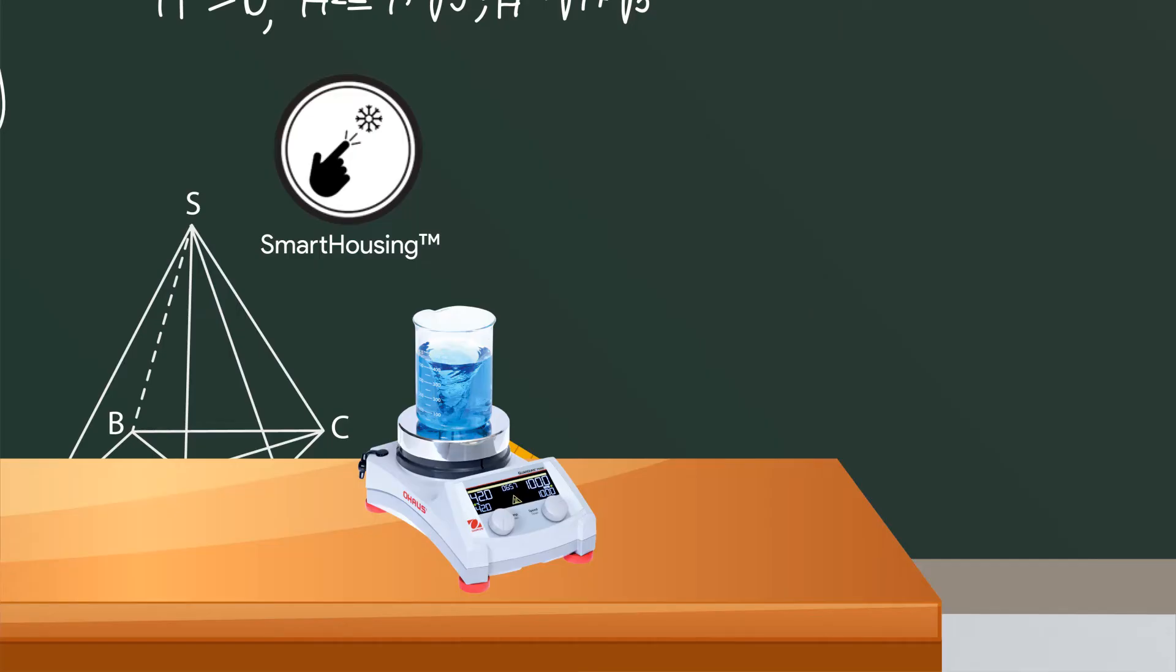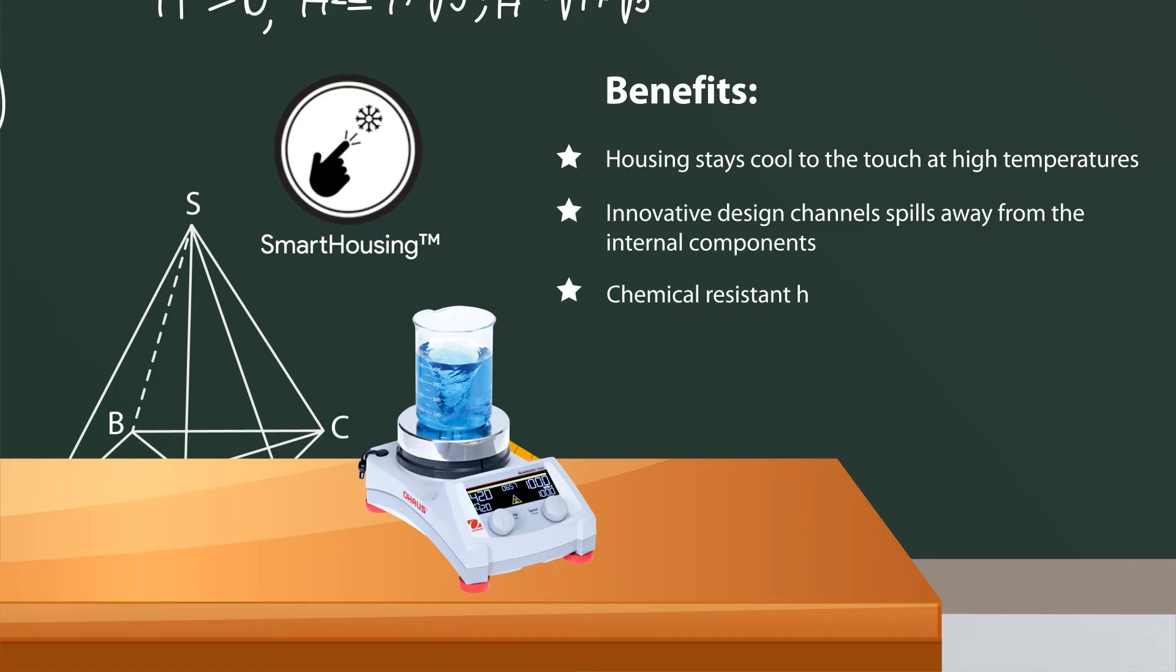Smart housing ensures that every Guardian Series Hot Plate Stirrer is consistently safe to use at high temperature settings with an innovative chemical resistant design that is easy to clean and channels away spills from internal components and the angled front panel.